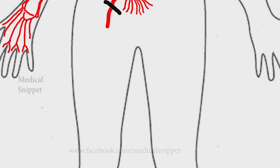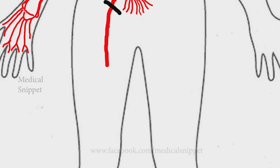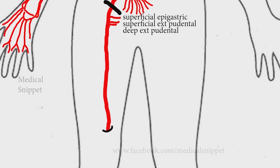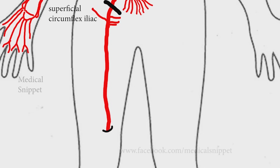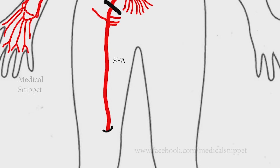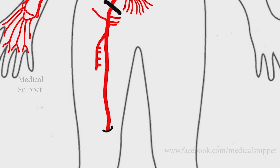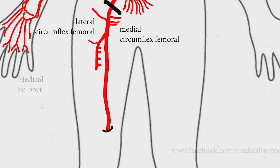The common femoral artery is a continuation of the external iliac artery. It gives rise to the superficial epigastric artery, superficial and deep external pudendal arteries, and superficial circumflex iliac artery. The common femoral artery continues as the superficial femoral artery after it gives off the profunda femoris artery. The profunda femoris gives perforating branches, and the lateral and medial circumflex femoral arteries.